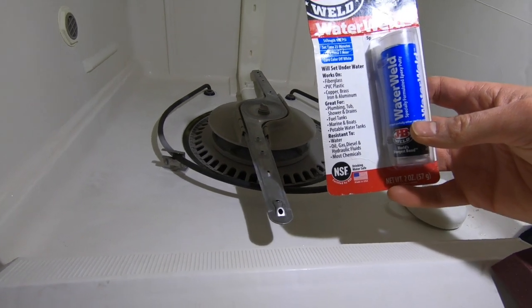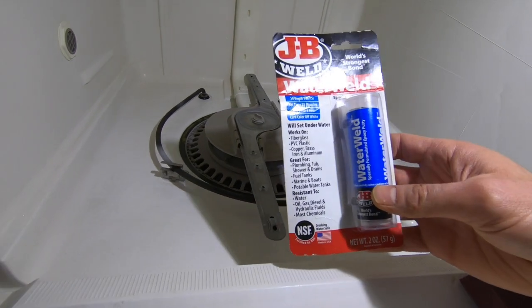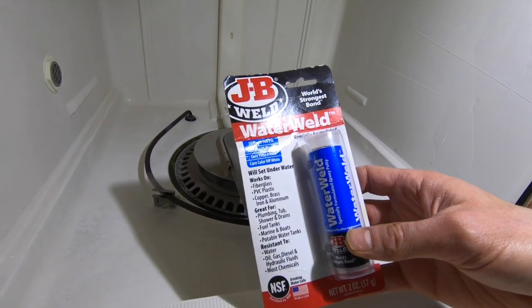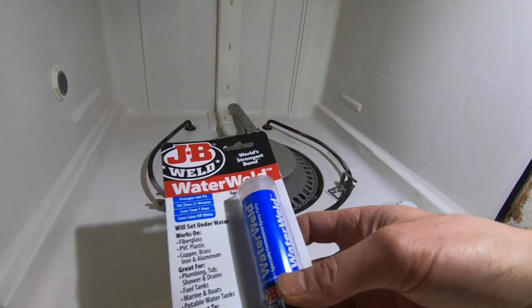Alright, so we're gonna try this JB Weld Water Weld. I haven't used this before on a tub, but it looks like it should do the trick. It says it will even set underwater, but it works on fiberglass, PVC, and a lot of other stuff.